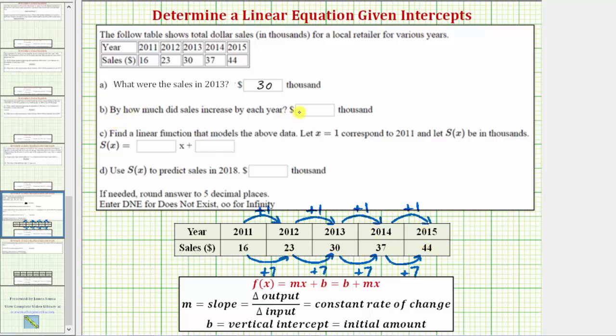So for part B, because we have the dollar sign and the units of thousand, we only enter seven. And now let's work on part C and D on the next slide.